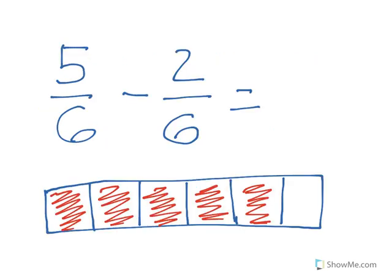So what we're going to learn in this video is how to subtract fractions with like denominators. When we say like denominators, that means the denominators are the same. So if you look at this example, we have 5 sixths minus 2 sixths.